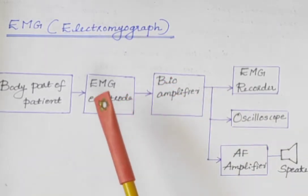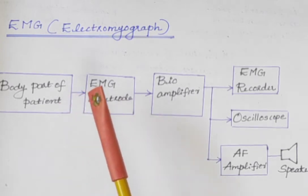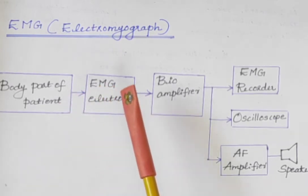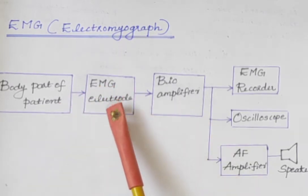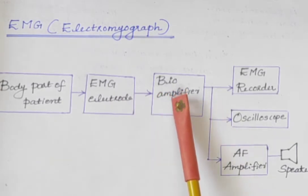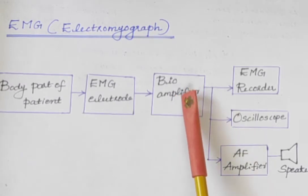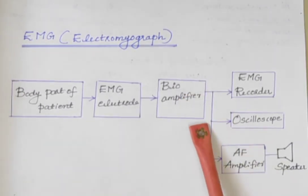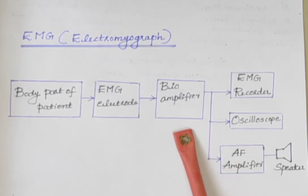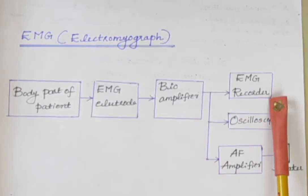EMG signals from the patient are measured using EMG electrodes and given to the bioamplifier. It is used to amplify bioelectric signals obtained from EMG electrodes. After amplification, EMG signals are given to EMG recorder.